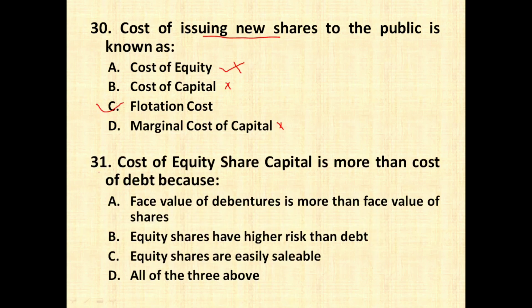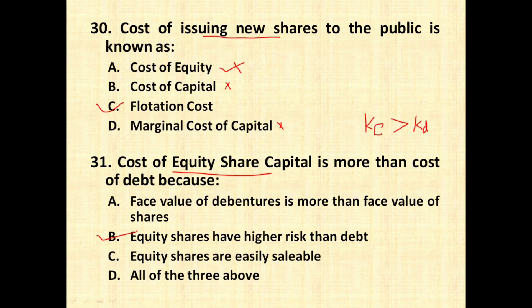The next question: cost of equity share capital (KE) is more than cost of debt (KD) because of what reason? The answer is that equity shares have higher risk than debt. As risk is higher, more return is expected. This is a basic rule in the security market: as risk increases, the return expected by investors also increases. Therefore, the cost of equity capital is more.